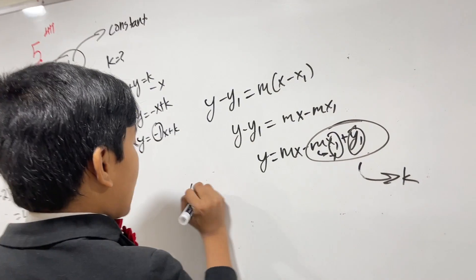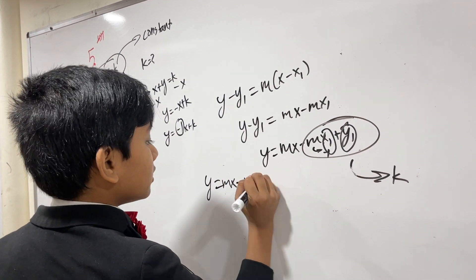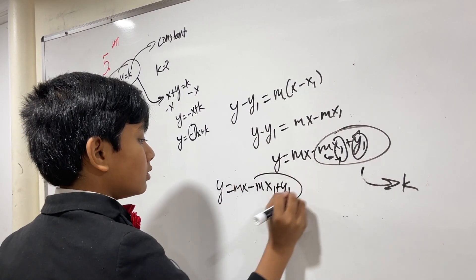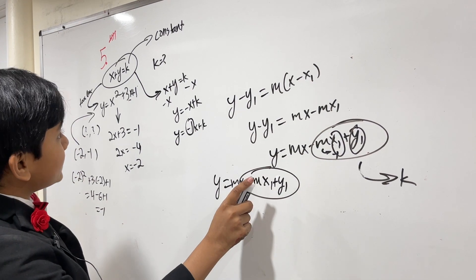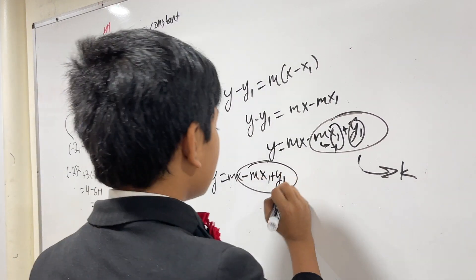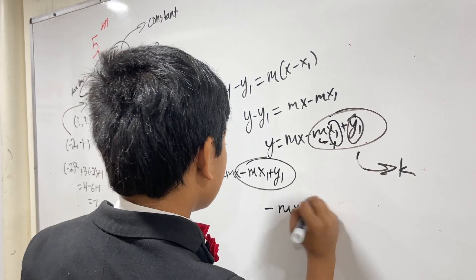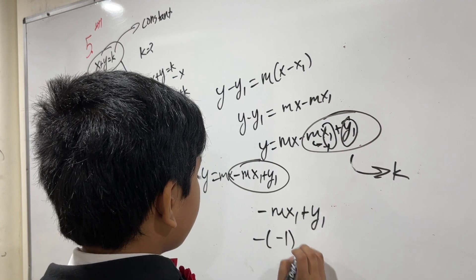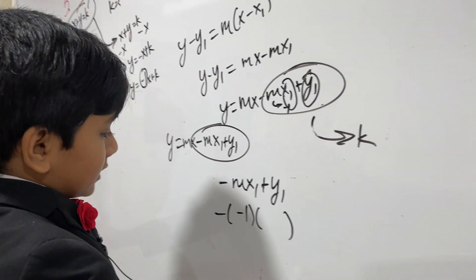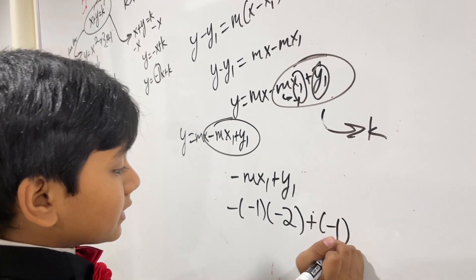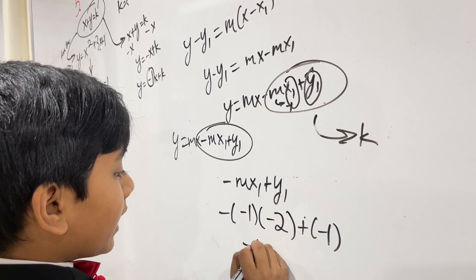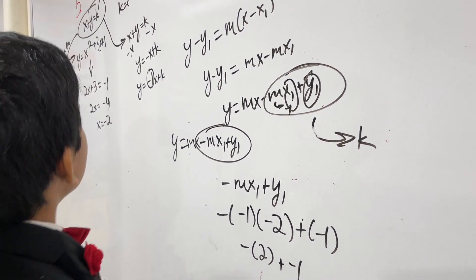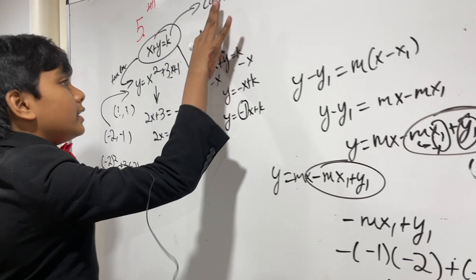Now, we get y equals mx minus mx1 plus y1. So to find k, all we need is this little guy right here, minus mx1 plus y1. So now we get minus 1 times x1 is minus 2 plus y1 is minus 1. So we get minus 2 plus minus 1, or minus 3. So that means that our answer is k equals minus 3.